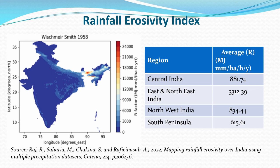Looking at the Rainfall Erosivity Index map: in central India the average R value is around 881.74; in east and northeast India it is 3312.39; in northwest India the average R value is 834.44; and in the south peninsula it is 615.61. These are the R values for different regions of India.